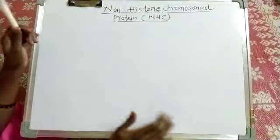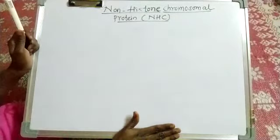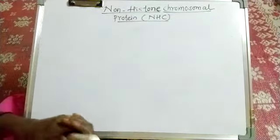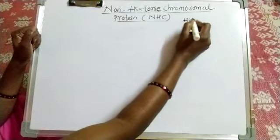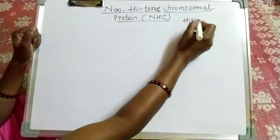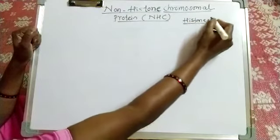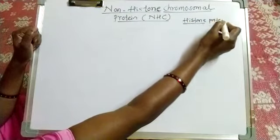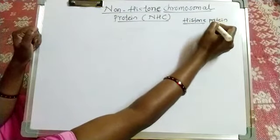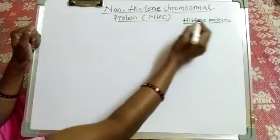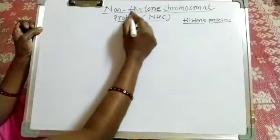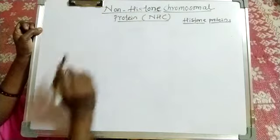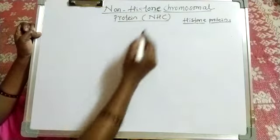In packaging of DNA, we have seen that for packaging of DNA, particularly the histone proteins, they are required. Histone protein contains the basic amino acids. Now there are some additional proteins which are used for packaging. These additional proteins are called non-histone chromosome protein, or NHC.